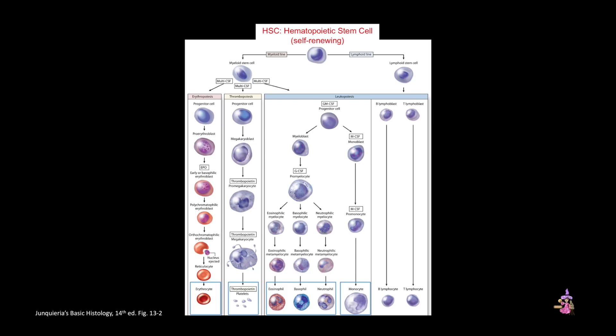For the next couple of slides, I've chosen to use an illustration from Junqueira's Basic Histology textbook to discuss the progenitor and precursor cells. This illustration may differ slightly from other sources, in part because the field of hematopoiesis is advancing rapidly — new intermediates and signaling factors are continuing to be discovered and their functions refined. However, our basic understanding of hematopoiesis is pretty consistent between different sources.